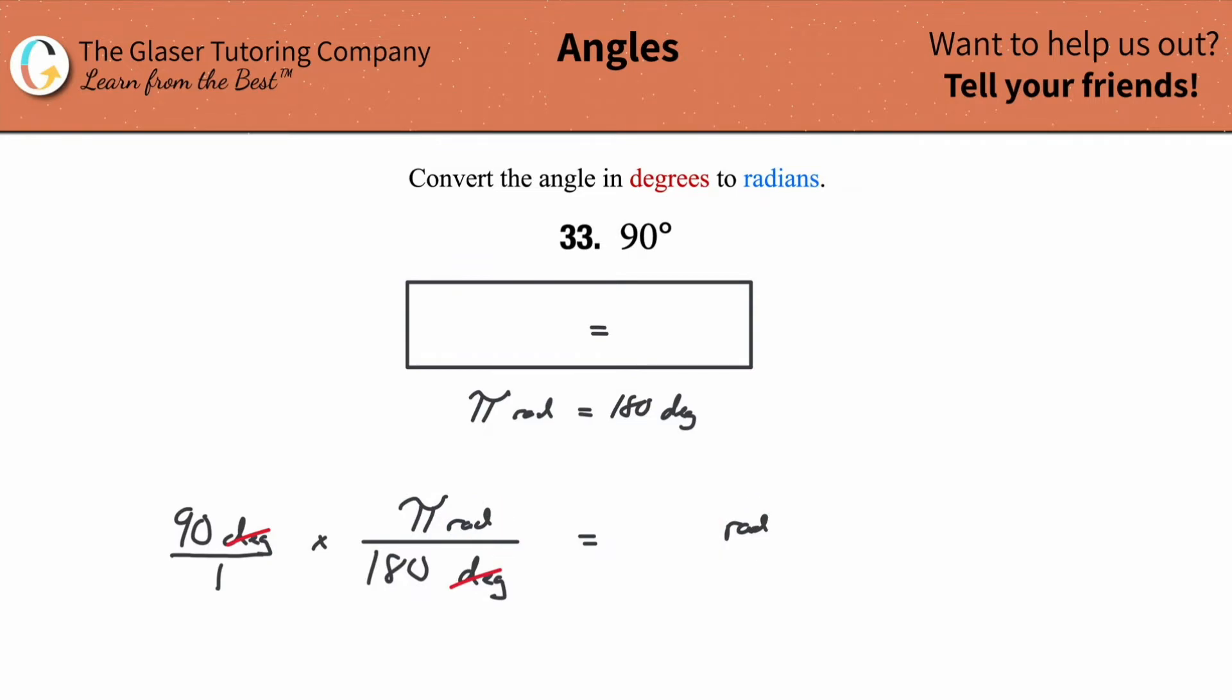So now all you need to do is just calculate it. First I'm going to simplify it. 90 goes into 180 how many times? 2. So pi over 2 radians.